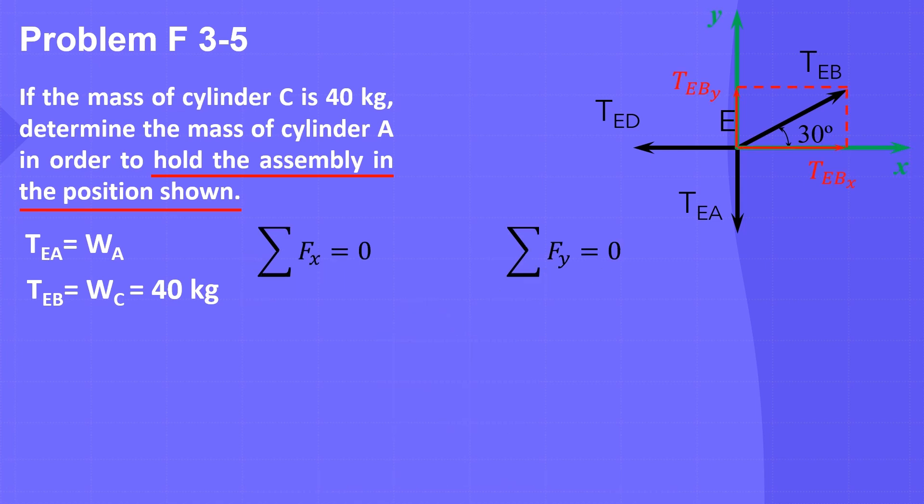Resolving the inclined force TEB into two components: horizontal component TEBx and vertical component TEBy, where TEBx = TEB cos 30° and TEBy = TEB sin 30°.